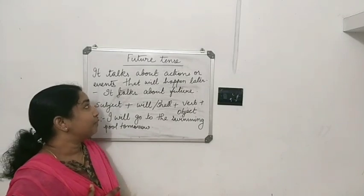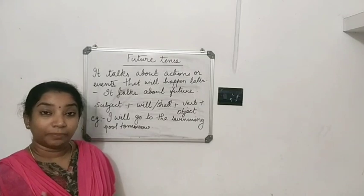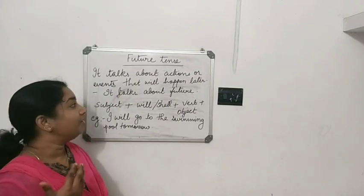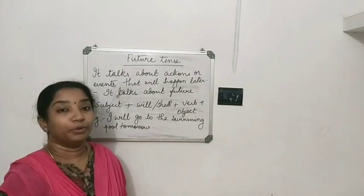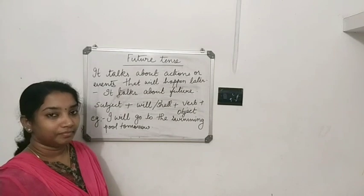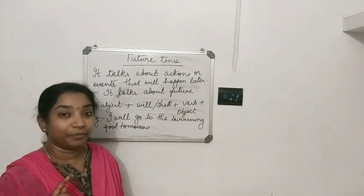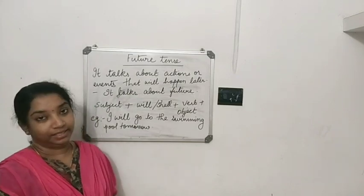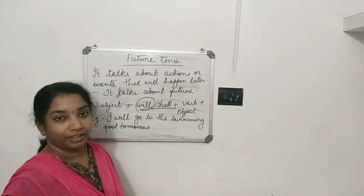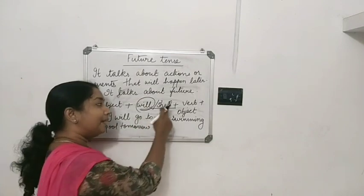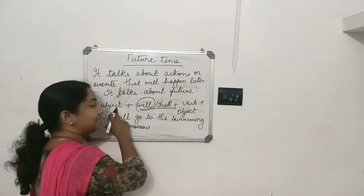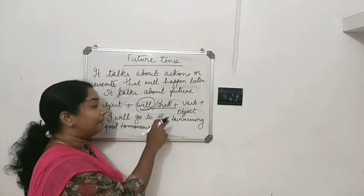Simple future tense talks about actions, events, decisions, promises, or hopes — things that will happen later. So what is the rule for that? Subject plus will or shall plus verb plus object. We usually use will. So the formula is: subject plus will plus verb plus object.